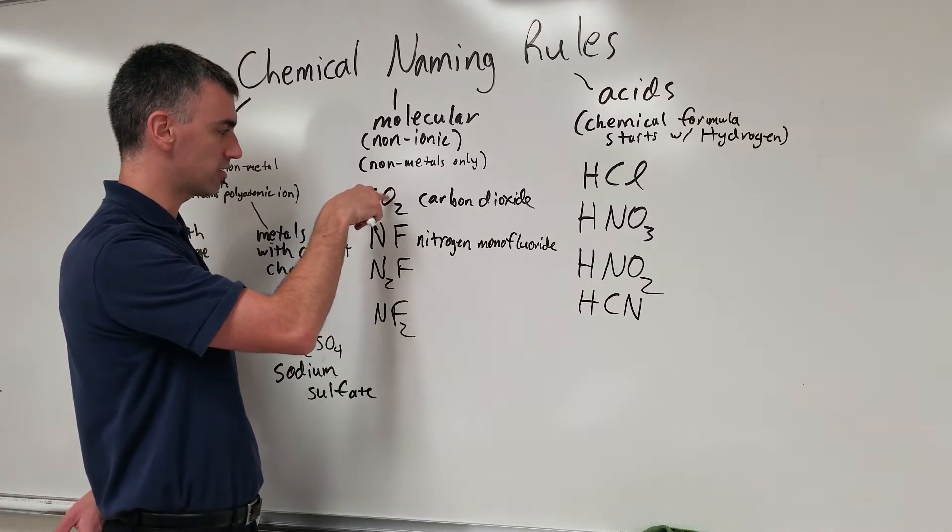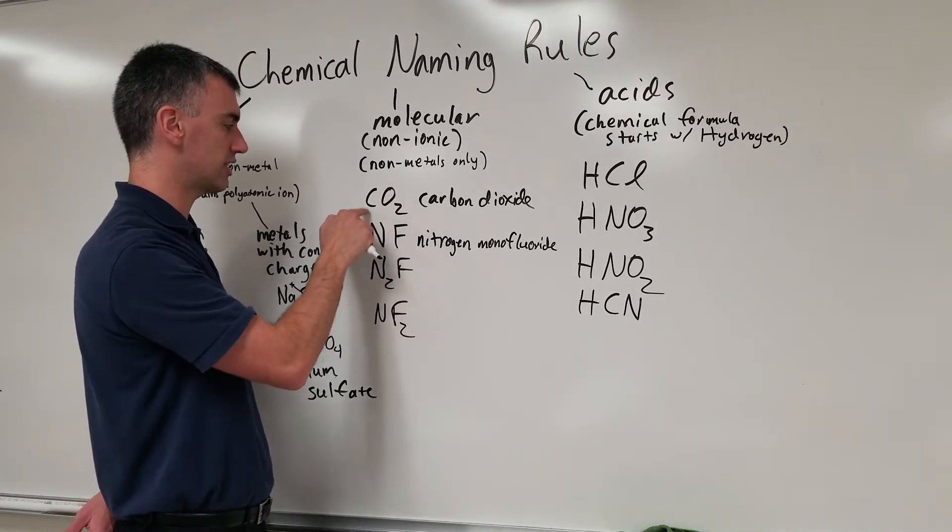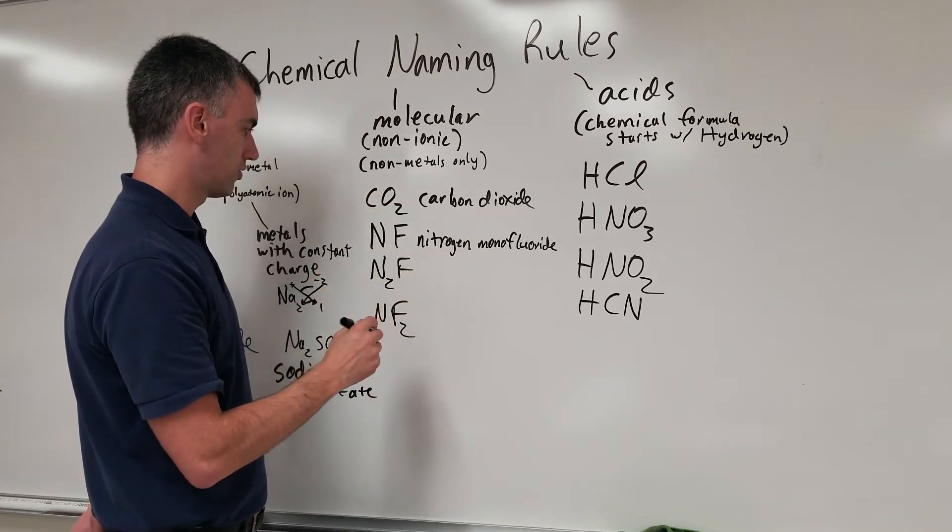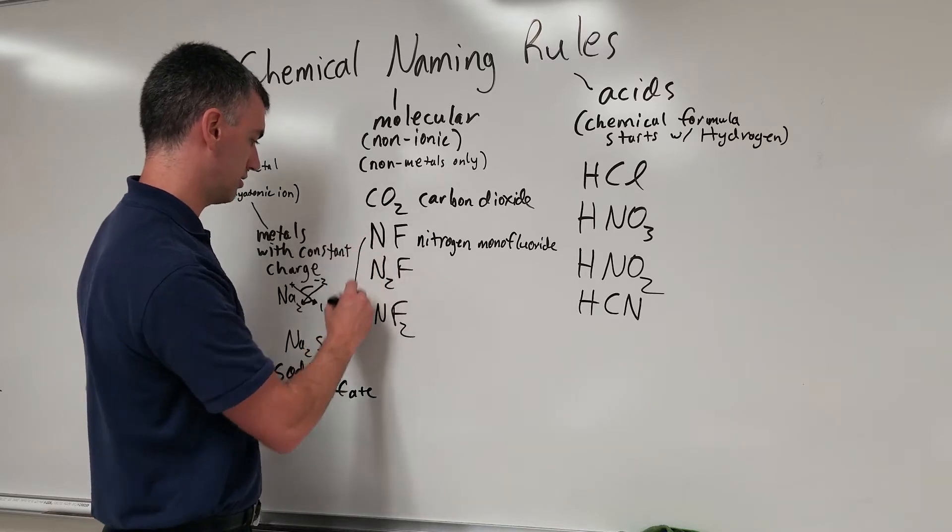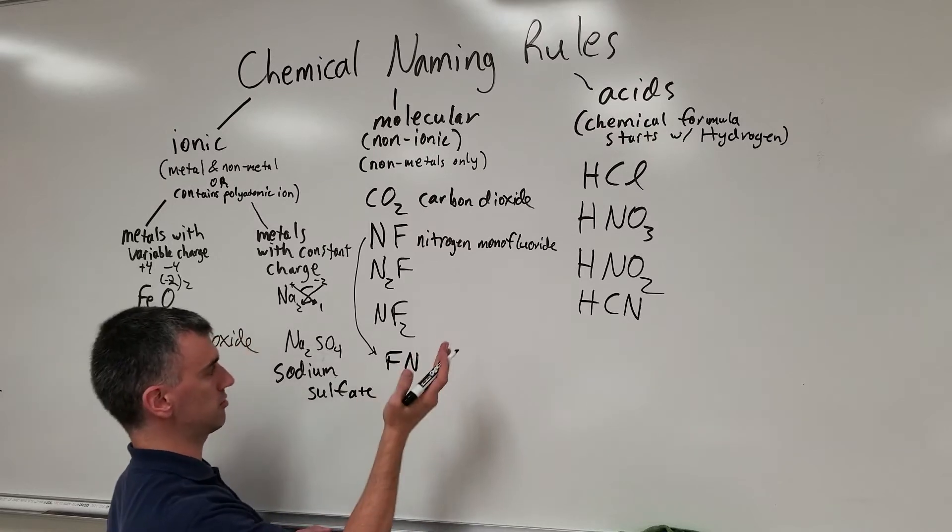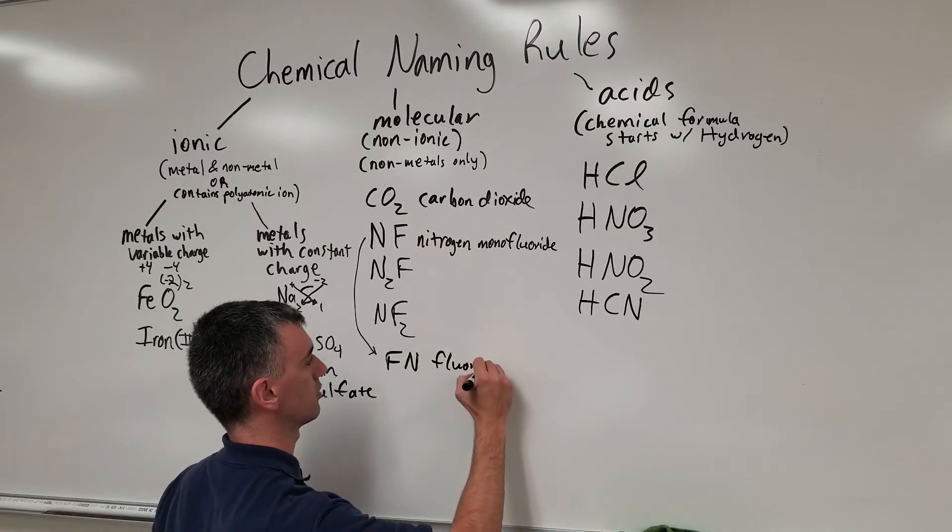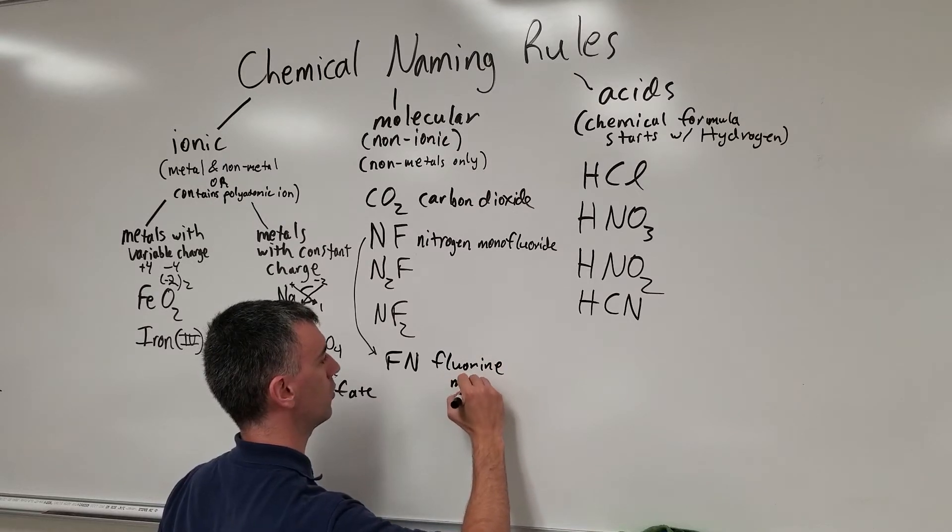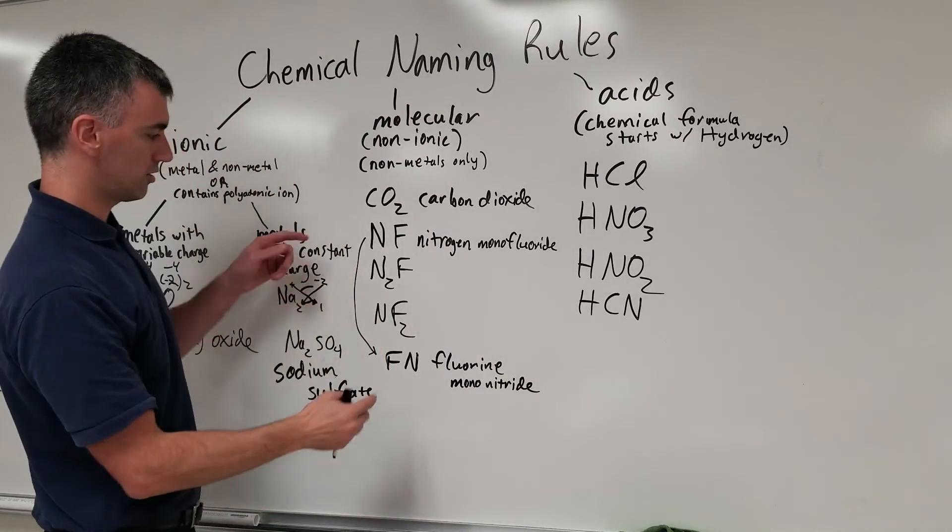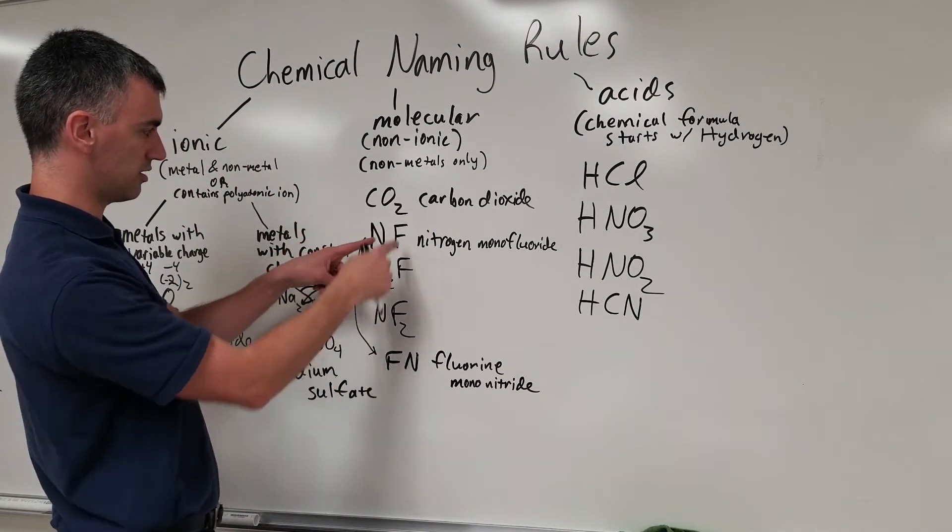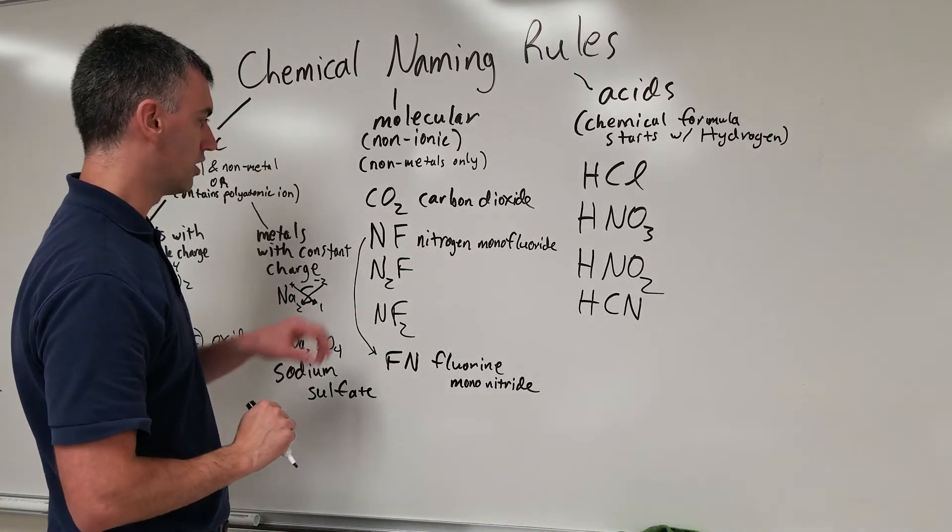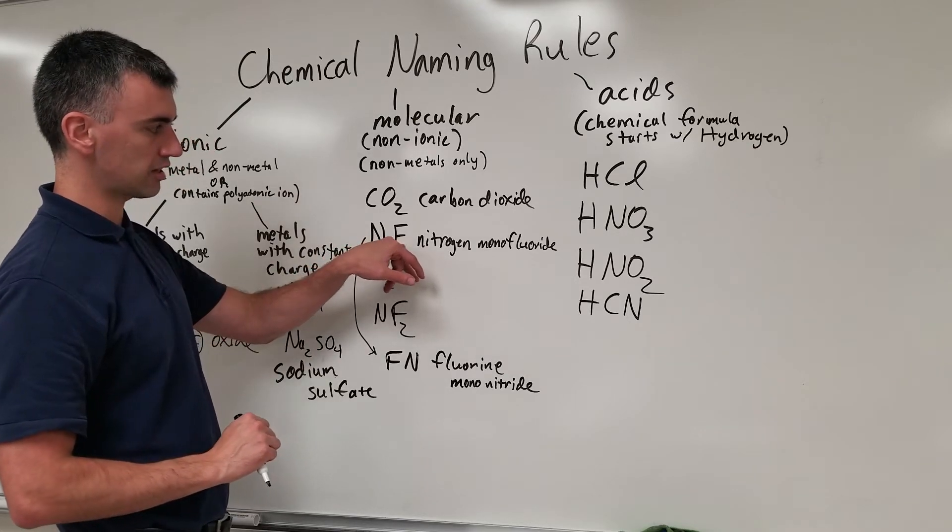This is the cation, so carbon dioxide. Suppose you had this. This would be called fluorine mononitride. Whichever one's first is just the name and the second one ends in -ide. Never use mono for the first one, but always use mono for the second one if there's just one. Never use mono for the first one if there's just one.